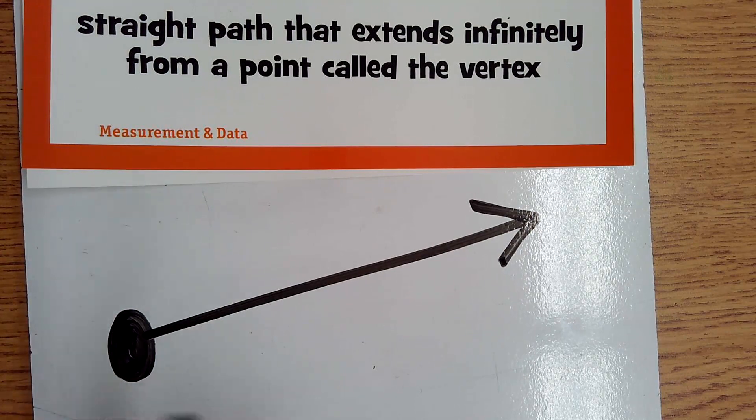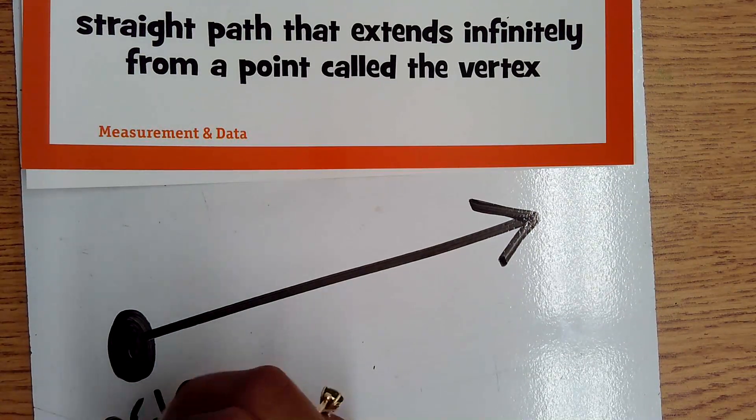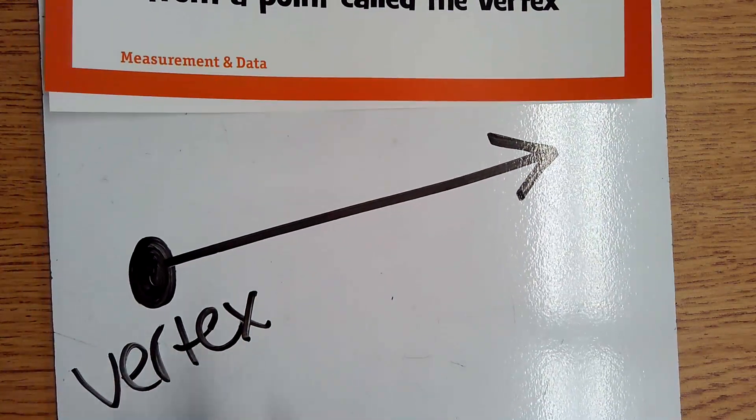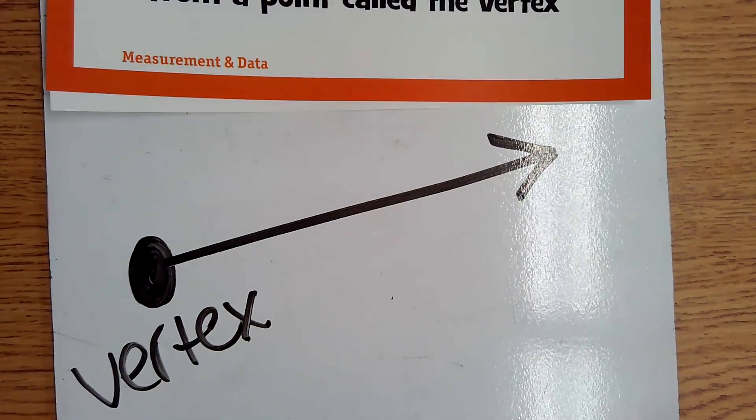So one end is the point, and we call this point our vertex. The other end is our line that will continue to extend.